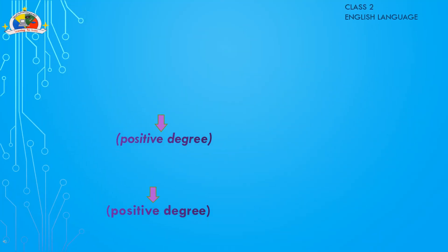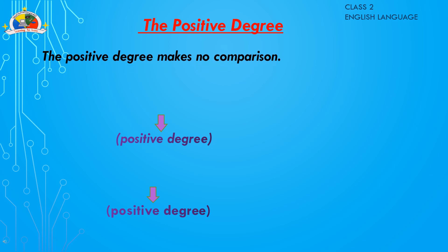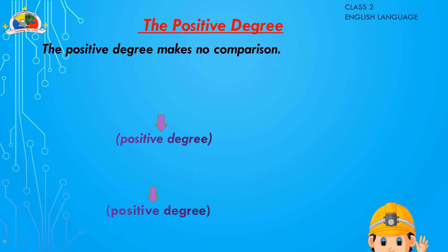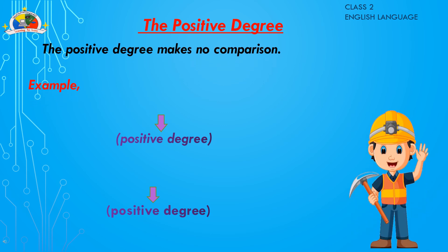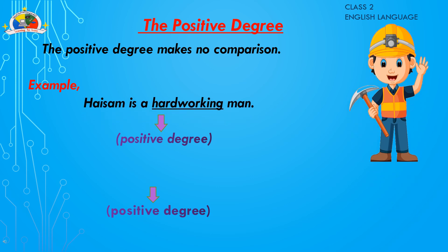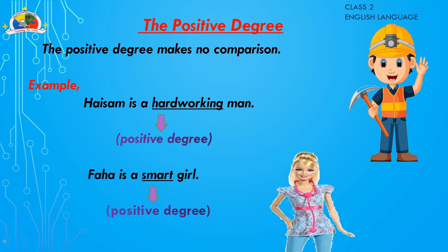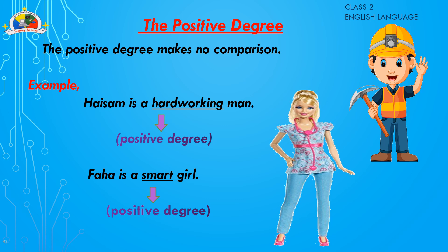The positive degree makes no comparison. For example, 'Hasam is a hard-working man' — 'hard-working' is a positive degree adjective as it tells us about the quality of a man without making any comparison. Another example: 'Faha is a smart girl' — it is a positive degree as we are talking about the quality of one girl and not comparing her with any other girl.